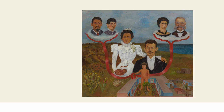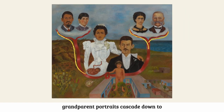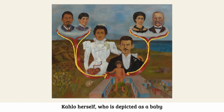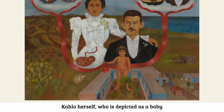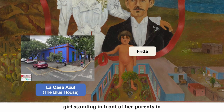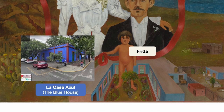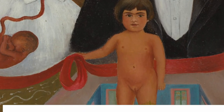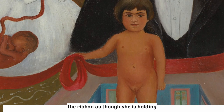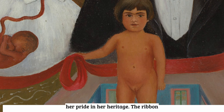The red ribbons that support the floating grandparent portraits cascade down to Kahlo herself, who is depicted as a baby girl standing in front of her parents in the courtyard of La Casa Azul, her blue house. The girl is shown holding onto the ribbon, as though she is holding tightly onto her genealogy, indicating her pride in her heritage.